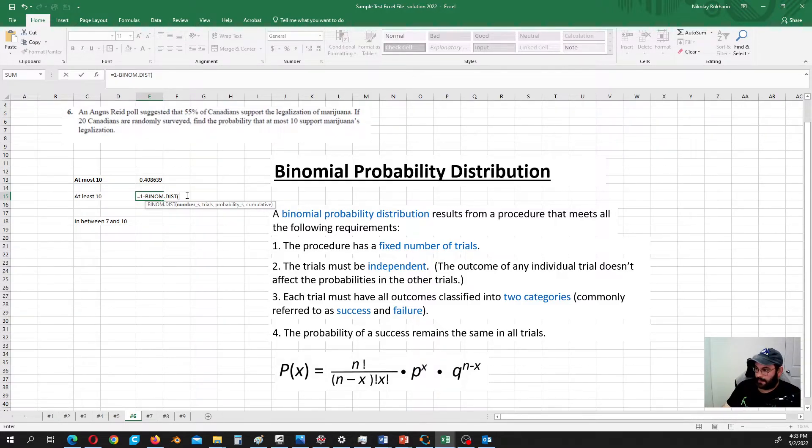Okay. So number of successes is 9. Trials is 20. Probability of success is 0.55. And that's cumulative. Okay. So at least 10. The probability is 0.75.